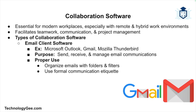Next, let's talk about collaboration software, which has become essential in modern workplaces, especially with the rise of remote and hybrid work. The first type is email client software. Email clients such as Microsoft Outlook, Gmail, or Mozilla Thunderbird are applications used to send, receive, and manage email communications. They're used for professional and personal communication and offer features like scheduling emails, organizing emails into folders, and managing contacts. Email clients should be used for formal communications, especially in business settings, and email etiquette is critical — be professional and concise, and avoid using email for urgent or informal conversations.